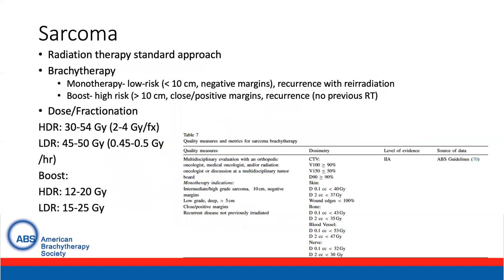With regards to sarcoma, radiation is a standard approach. It can be delivered preoperatively or postoperatively. Brachytherapy can be delivered as monotherapy primarily for low risk sarcomas or in the setting of recurrence with previous external beam. Brachytherapy can also be used as a boost in high risk patients, which include larger tumors, close or positive margins, or recurrence with no previous RT. With regards to dose and fractionation for monotherapy, we typically use 30 to 54 Gy in 2 to 4 Gy fractions or LDR 45 to 50 Gy. For boost, about 12 to 20 Gy for HDR and LDR 15 to 25 Gy. Quality measures include multidisciplinary evaluation with orthopedic oncologists, medical oncologists, or radiation oncologists, with dosimetric guidelines provided for target coverage as well as the skin, bone, blood vessels, and nerves.